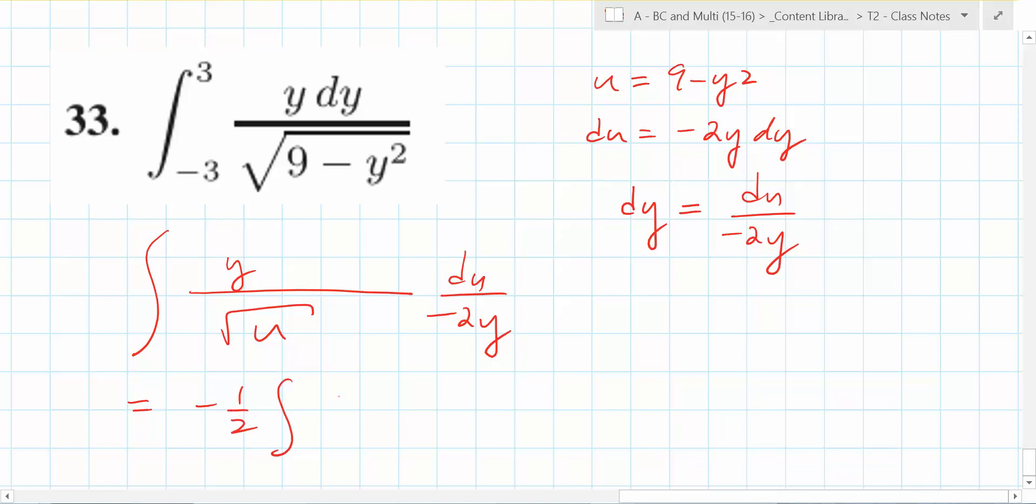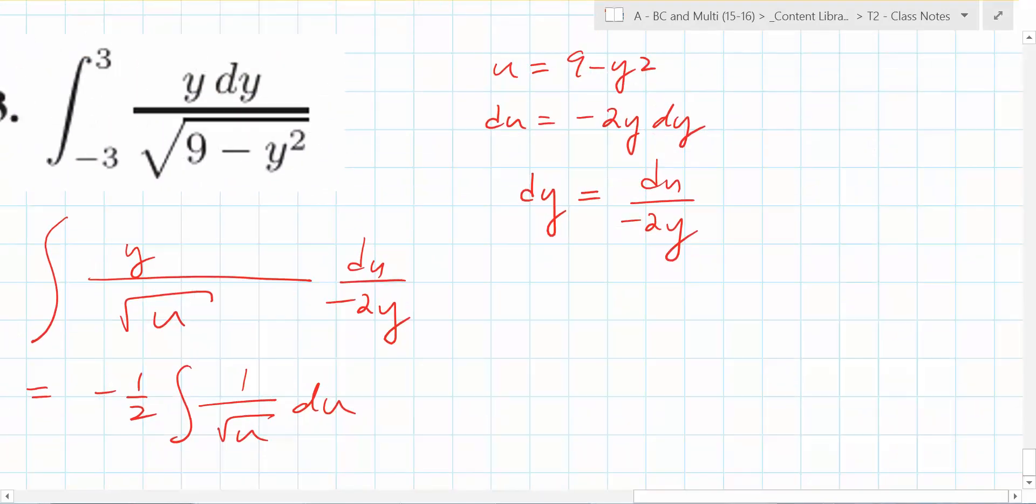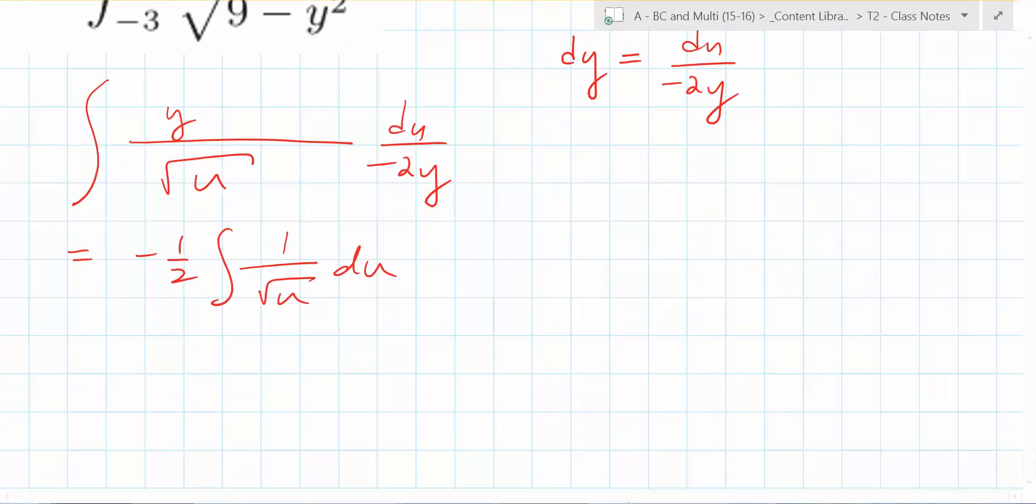Okay. So what do we end up with here? We have negative 1 half, the integral of 1 over the square root of u du, correct? Nice. Okay. So what does u equal? Nine minus y squared. It does. Okay. So let's integrate this first. What's the integral of 1 over the square root of u? One half times square root of u. We have this times what? One over the square root of 1 half times square root of u. One half? Really? Yeah. So this is u to the negative one half, right? Is that correct? Yeah. Isn't it 2u to the 1 half? Isn't that correct? Yes. That seems to be correct. Nice.